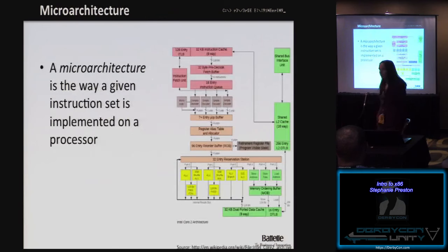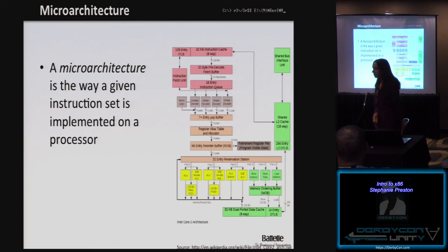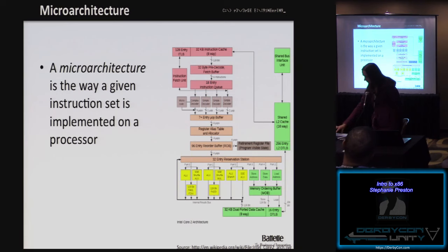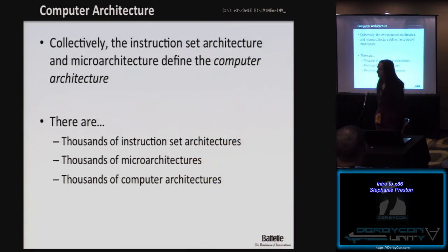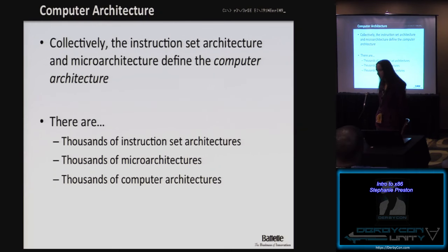An ISA is just one piece of the puzzle. An ISA describes what that architecture has to be capable of doing, but a microarchitecture is the way that architecture would actually be implemented. This flowchart is the microarchitecture of the Intel Core 2 Duo — how Intel specifically chose to implement the ISA for x86 on that processor. Collectively, the instruction set architecture and the microarchitecture define a computer architecture. There are thousands of ISAs, microarchitectures, and computer architectures out there.